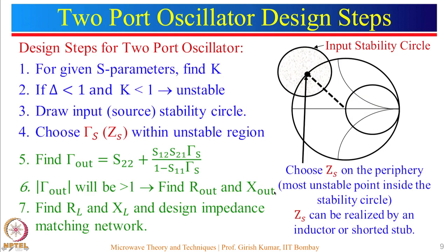After this we looked at the two-port oscillator design — I had shown you seven different steps. Let us go through it once more because oscillator design is crucial for many applications. Given S-parameters at a known frequency and biasing condition, find k. If delta is less than 1 and k is less than 1, the device is unstable. If k is greater than 1, the device is stable, and I will tell you what to do in that case in the next slide.